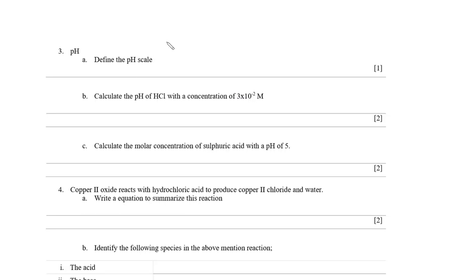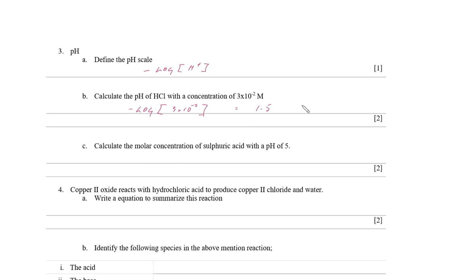The pH scale is the negative log of the hydrogen ion concentration, expressed in moles per litre. To calculate the pH of hydrochloric acid at a concentration of 3×10⁻² M, we do negative log of 3×10⁻², which gives a pH of 1.5.